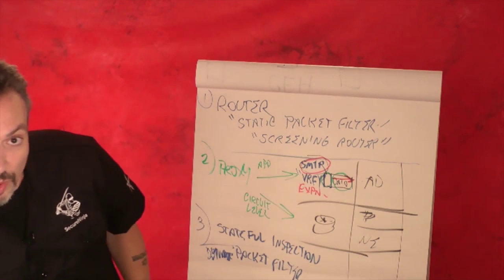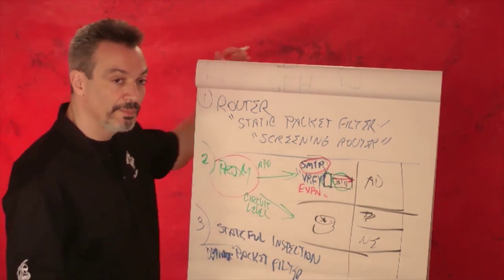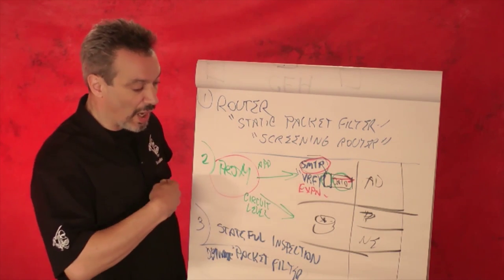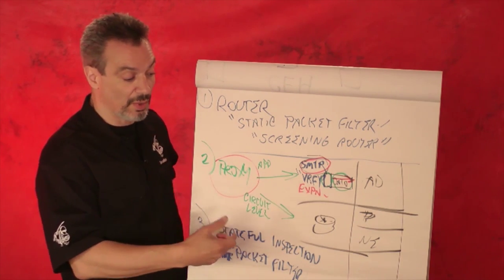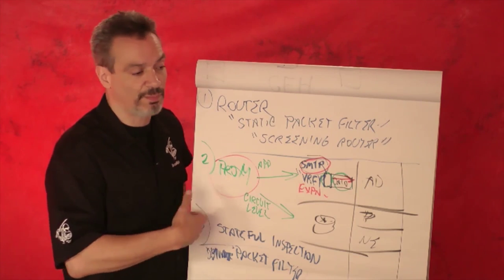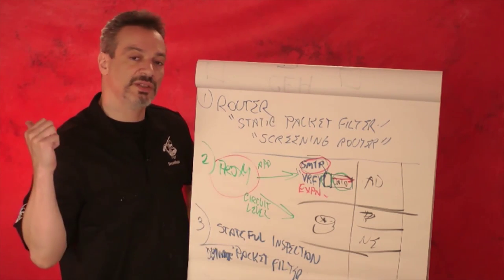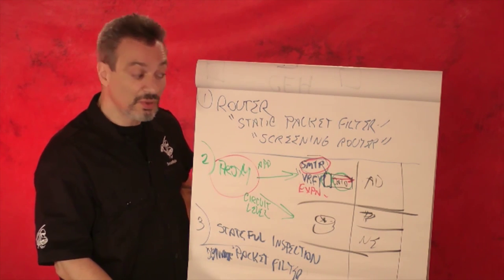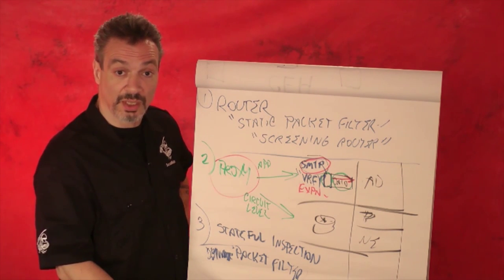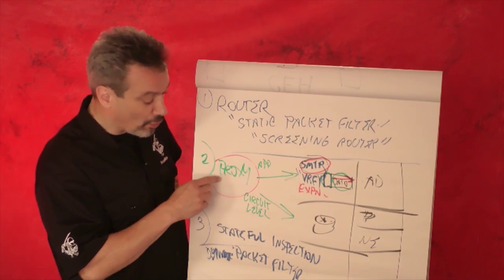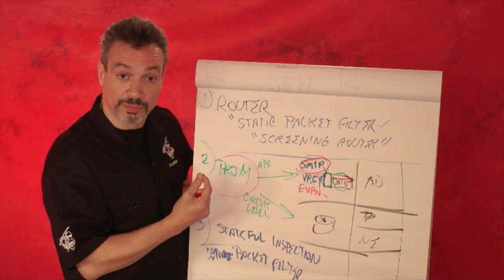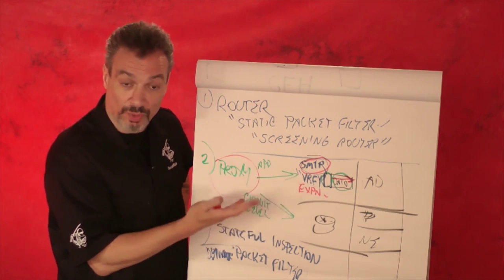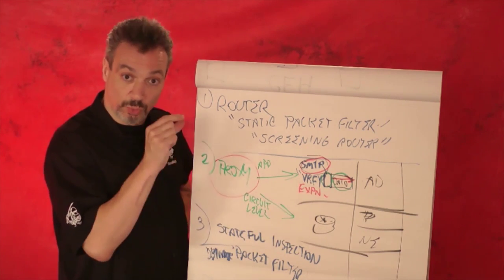That didn't happen in the proxy, did it? The proxy didn't really let them in. If you remember network address translation — where inside I'm 192.168, but they translated me — on the outside, all people see is a single IP address. It's a little harder to figure out what's going on inside. So the proxy adds a little extra layer of protection. They may proxy the attack so it doesn't always work, but it's one extra thing.